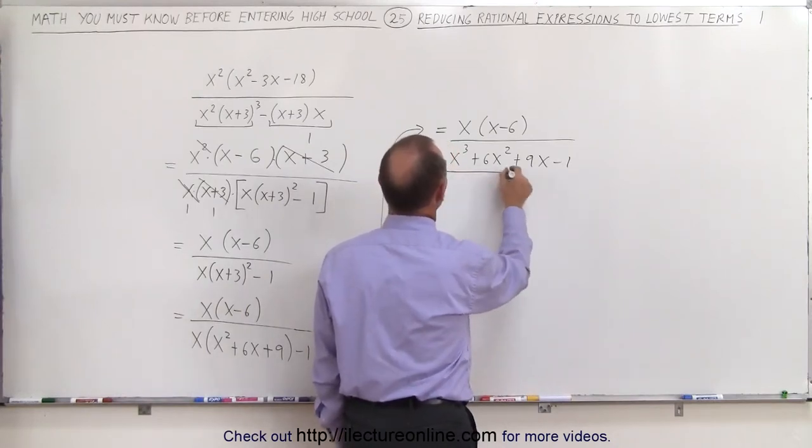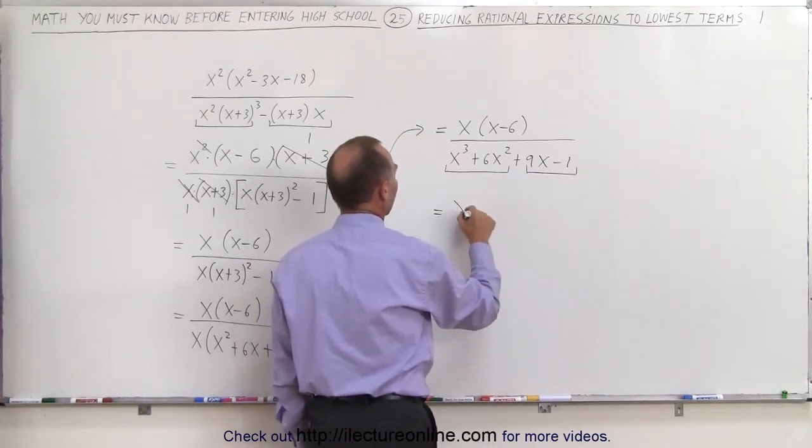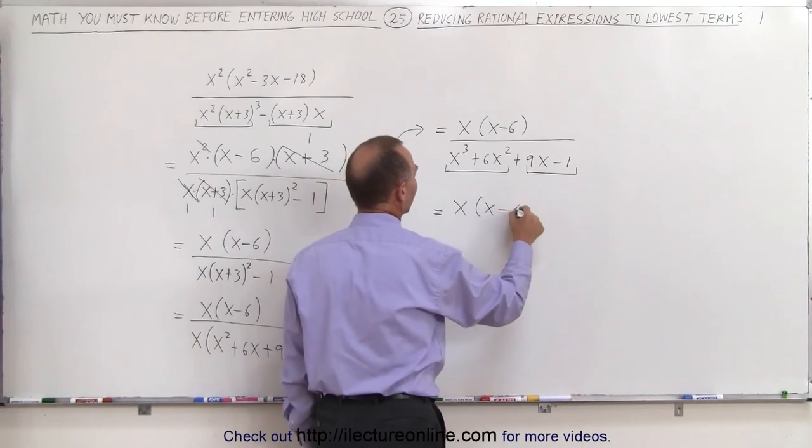I can perhaps group them together like this, and like this. If I do that, see what I end up with. x times x minus 6 in the numerator, that doesn't change,